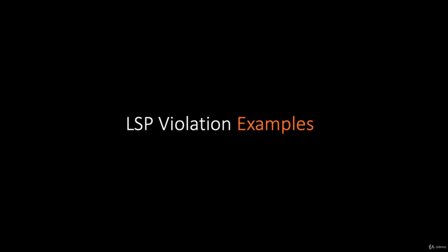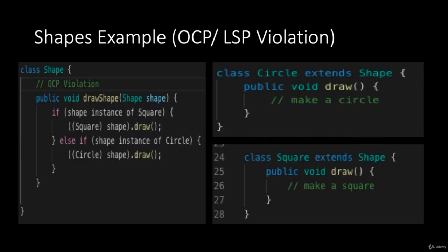Let's look at a shapes example. We have a base class called Shape, which provides an interface for clients to draw a shape by passing a Shape instance. Shape has two subclasses: Circle and Square. In the drawShape method, there's an open-closed principle violation — this method explicitly checks what shape instance it receives and calls the particular draw method for that class. This method needs to be modified whenever a new class is added to the shape hierarchy, making it not closed for modification.